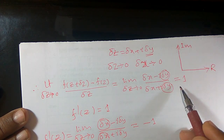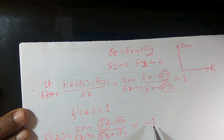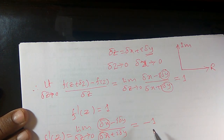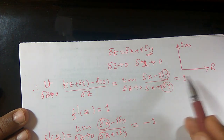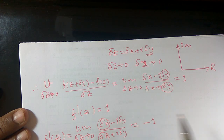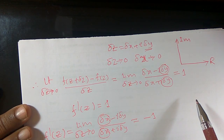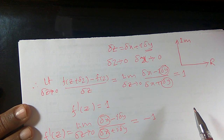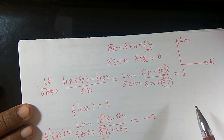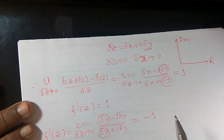Along the real axis we obtained 1, and along the imaginary axis we obtained −1. The derivative along two different paths is different from one another, so the derivative is not unique. Hence f(z) = z̄ is not analytic at z. Thank you.